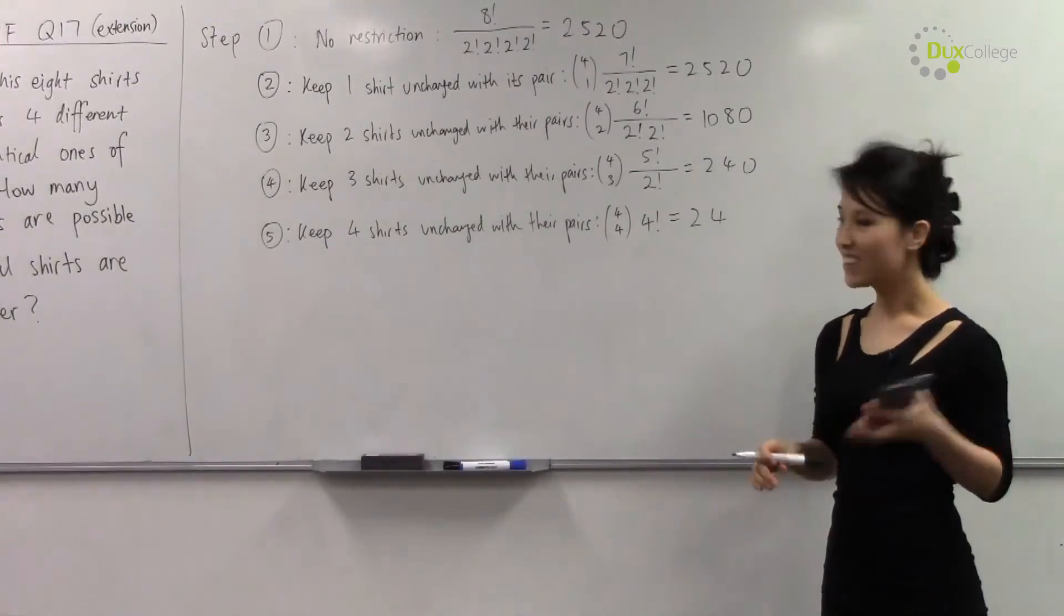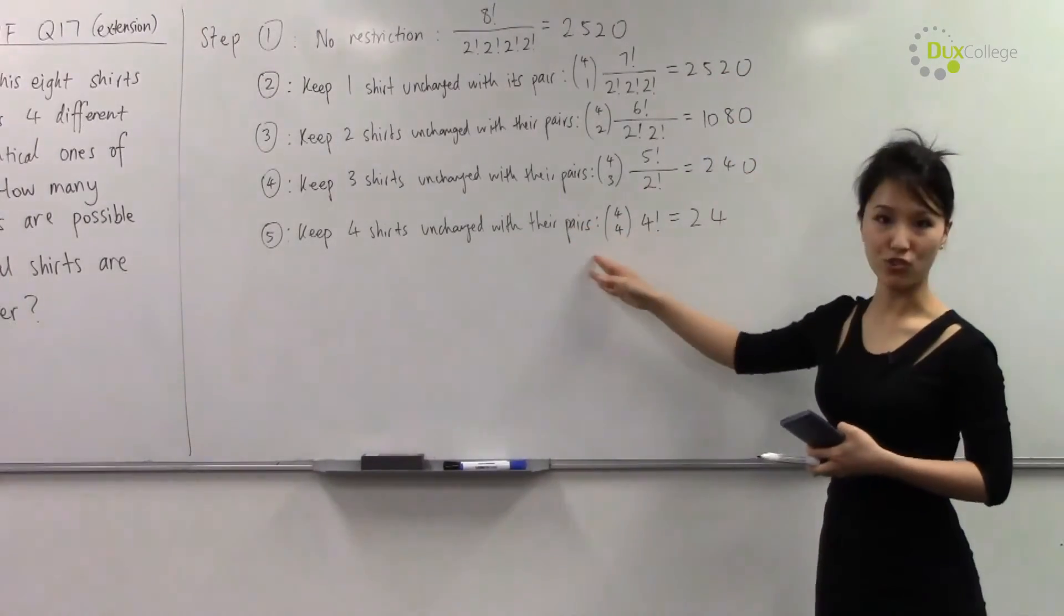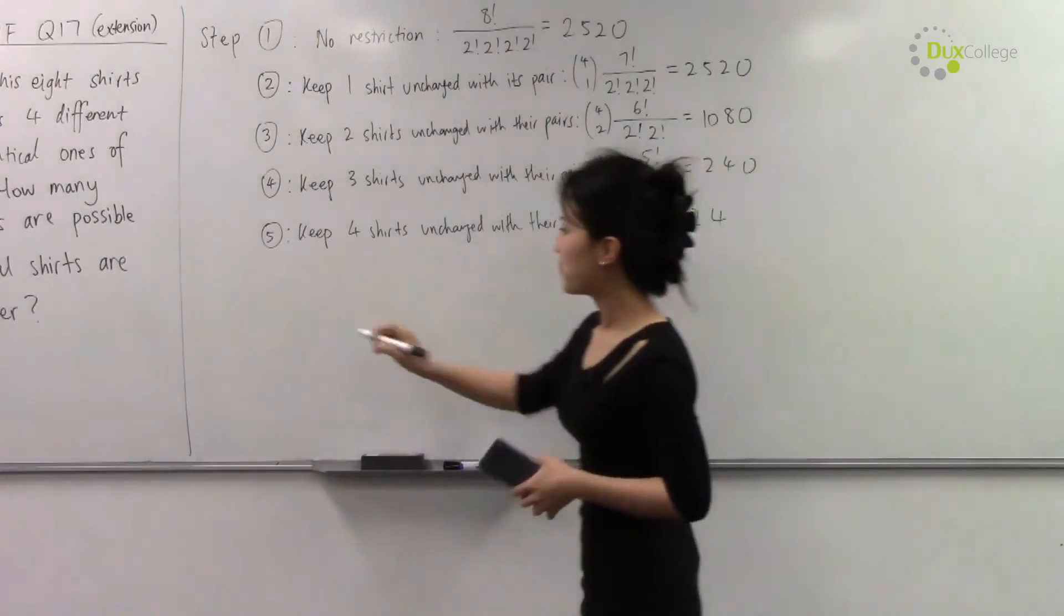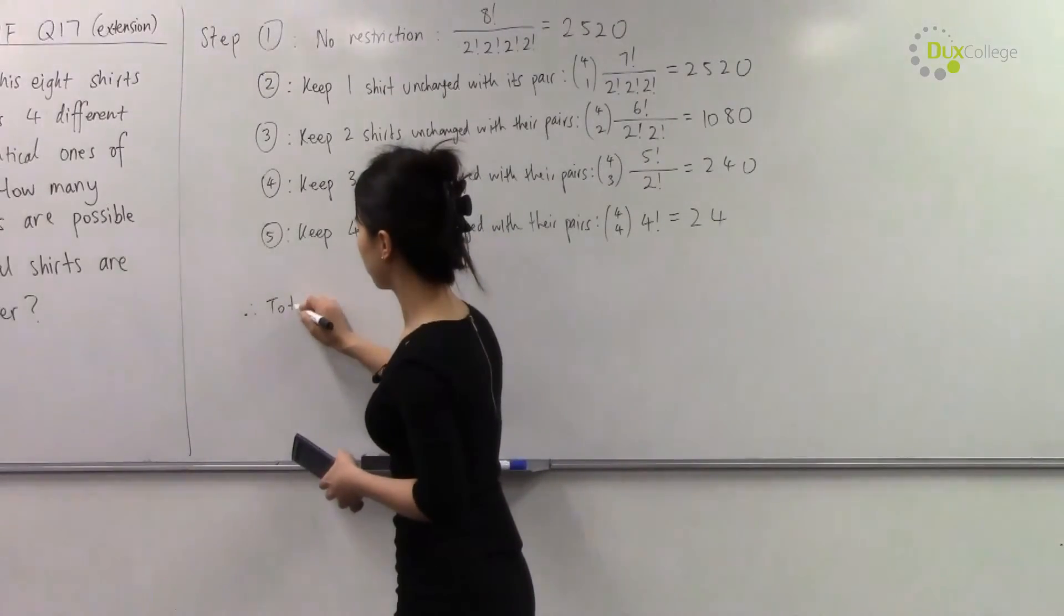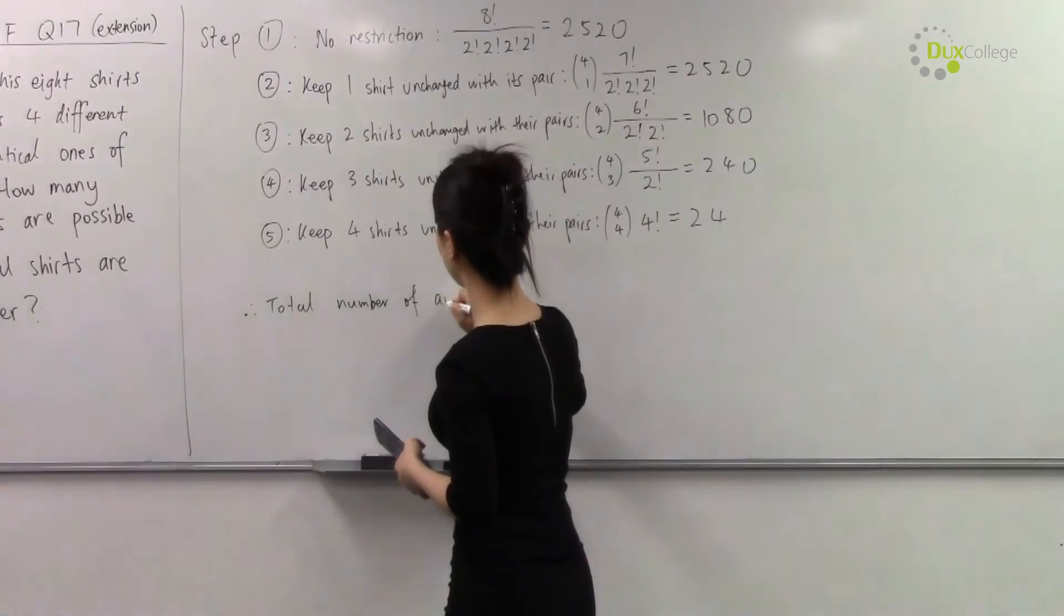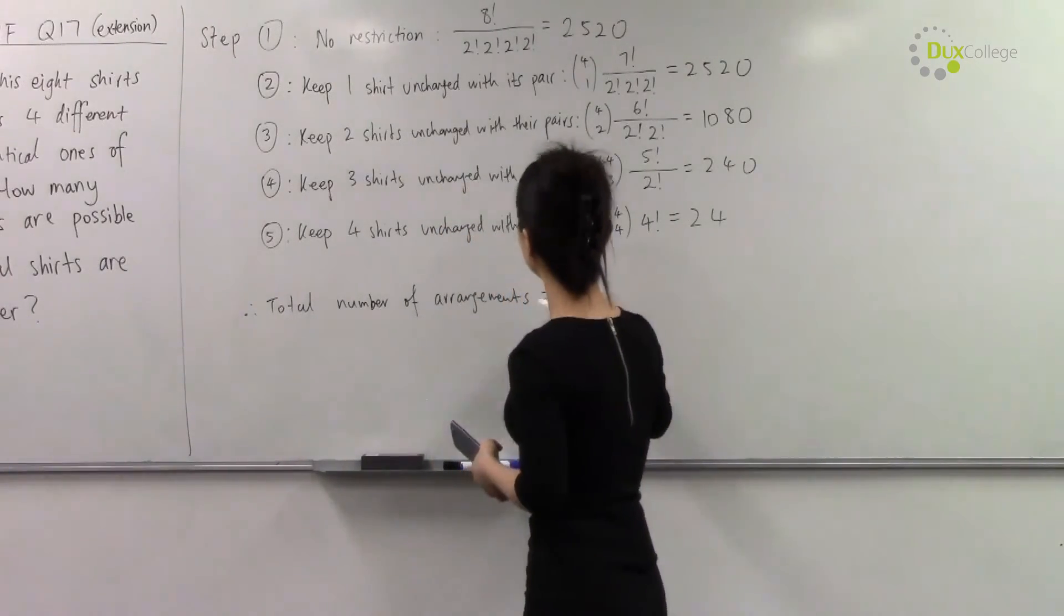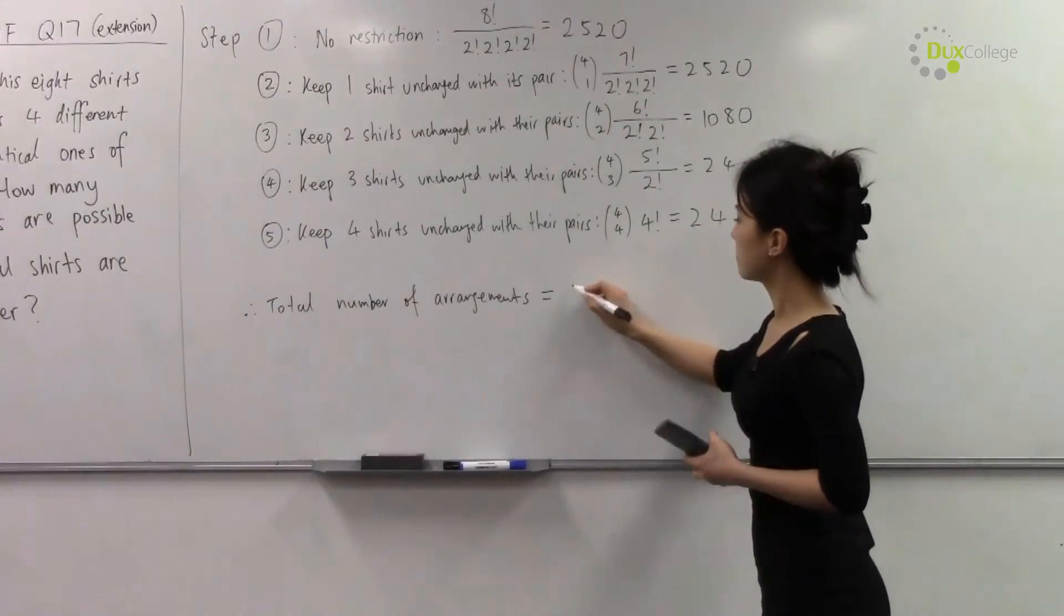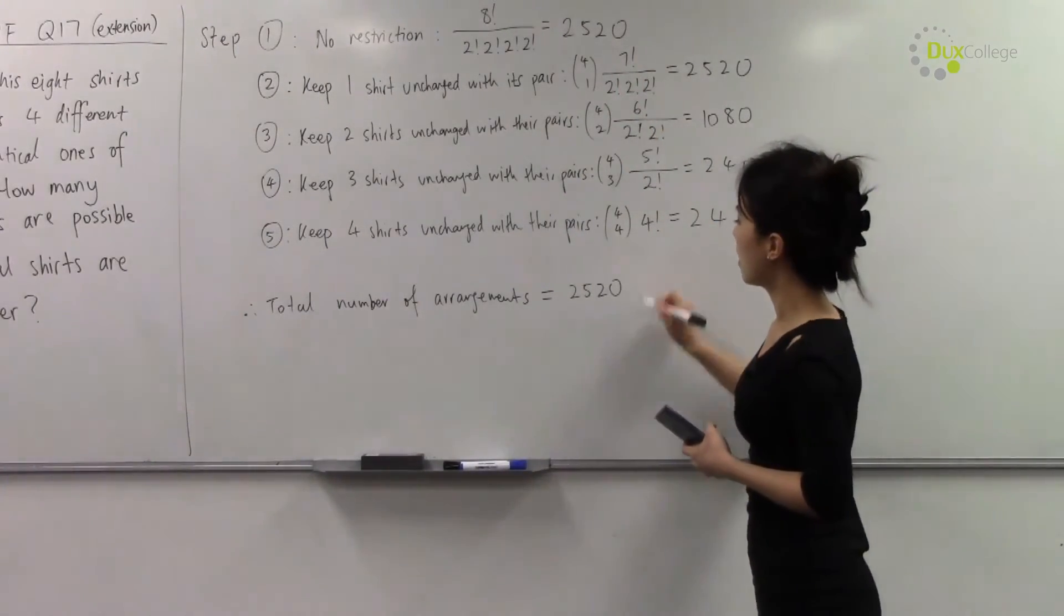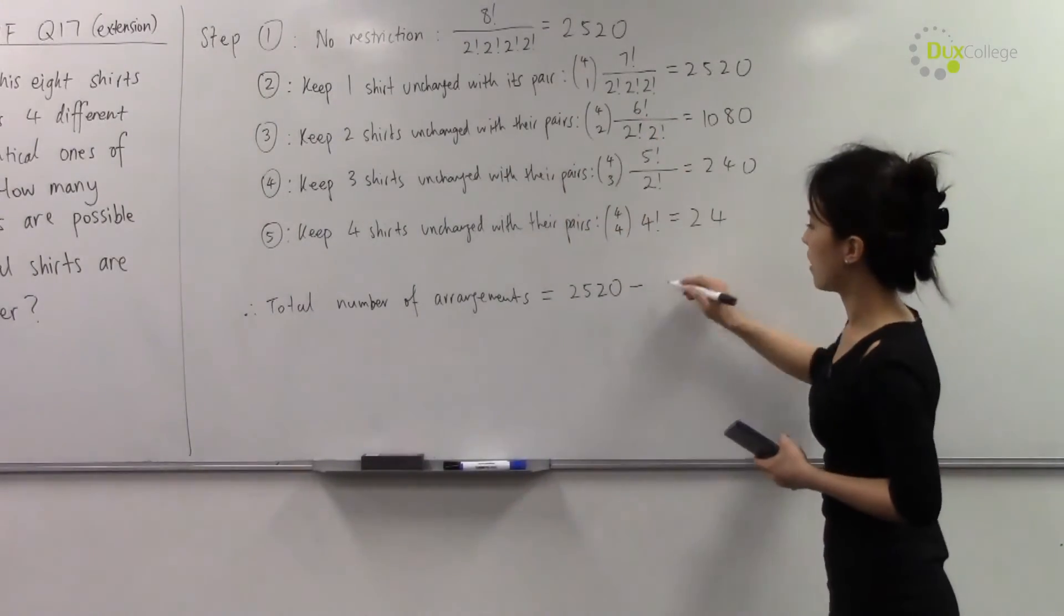So after using our calculator, here are the number of arrangements for the individual case. So therefore, the total number of arrangements equals to no restrictions, subtract when you're keeping one shirt with its pair unchanged.